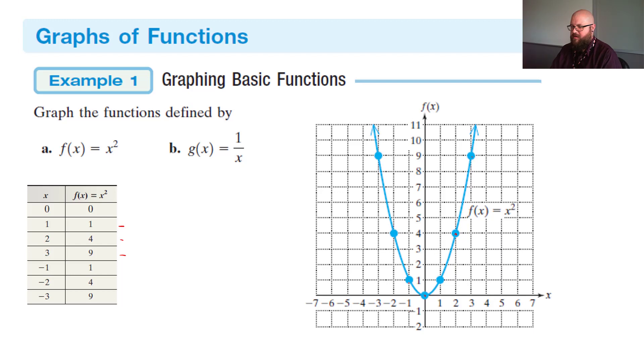And then there was the same thing over here for the negative values as far as the y values. We had negative 1 and 1, negative 2 and 4, and negative 3 and 9. So that gave us our parabola here, opening upwards.